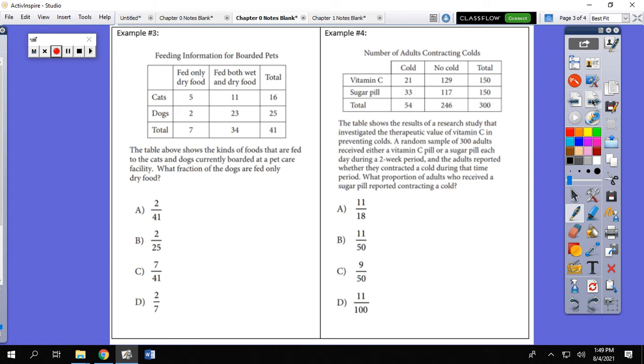So in example 3, the table above shows the kinds of foods that are fed to cats and dogs currently boarded at a pet care facility. What fraction of the dogs are fed only dry food? So notice in the two-way table that the pets are broken up into cats and dogs. And they're also broken up into which animals eat dry food and which animals eat wet food. So again, we look at the way the problem is worded. What fraction of the dogs, so your total should be 25, are fed only dry food? So we want the number for only the dogs. That's the only row we care about. And this top number, the dry food, would be 2. So our answer would be B, 2 out of 25.